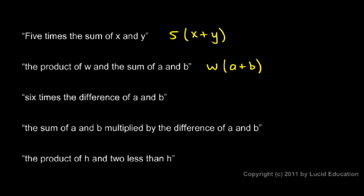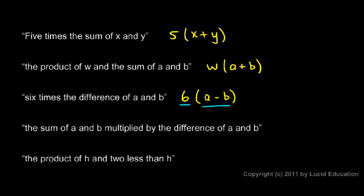Six times the difference of a and b. This is six times (a minus b). That's the difference of a and b — a minus b — and we have six times that: six times (a minus b).